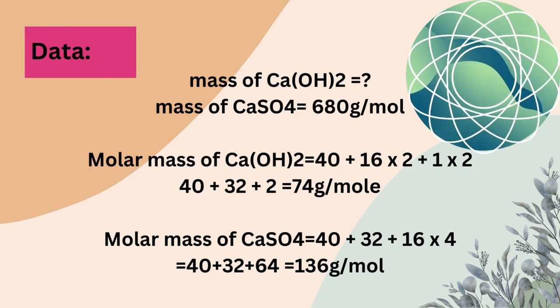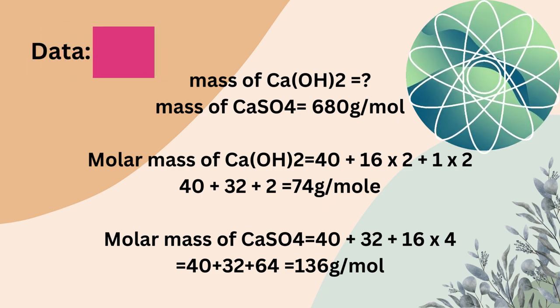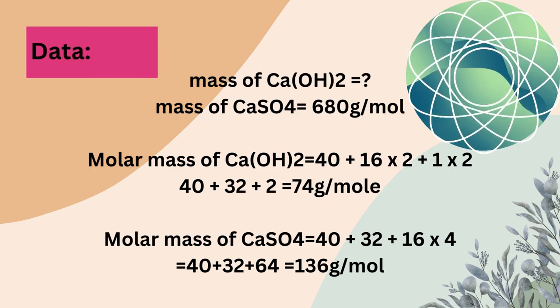Molar mass of calcium hydroxide: 40 plus 16 times 2 plus 1 times 2 equals 40 plus 32 plus 2 equals 74 grams per mole.